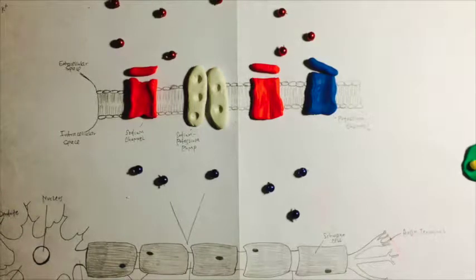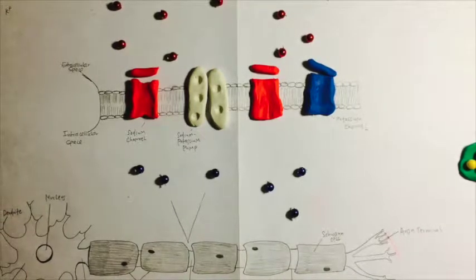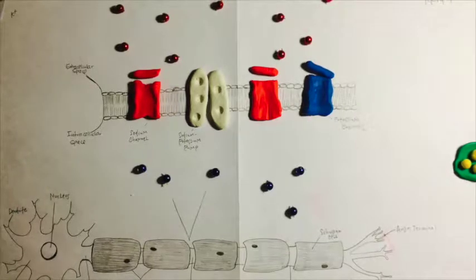This is Tiffany Hu period 4. The membrane potential is the voltage or charge difference across the plasma membrane because of the distribution of ions.